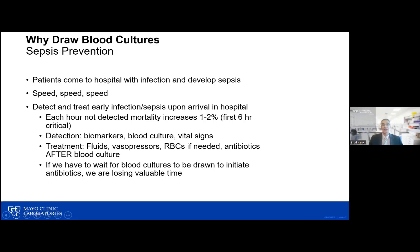We have this magic six-hour window where we need to detect sepsis, get labs measured, determine the patient has sepsis, get a blood culture drawn, and then start broad-spectrum antibiotics. Based on the results of a blood culture — or urinary tract culture or culture of an affected site — we tailor those antibiotics to make sure they're effective. If we give antibiotics before culturing the blood, we lose that chance to identify the organism. If we have to wait to do blood cultures, we're just losing valuable time.